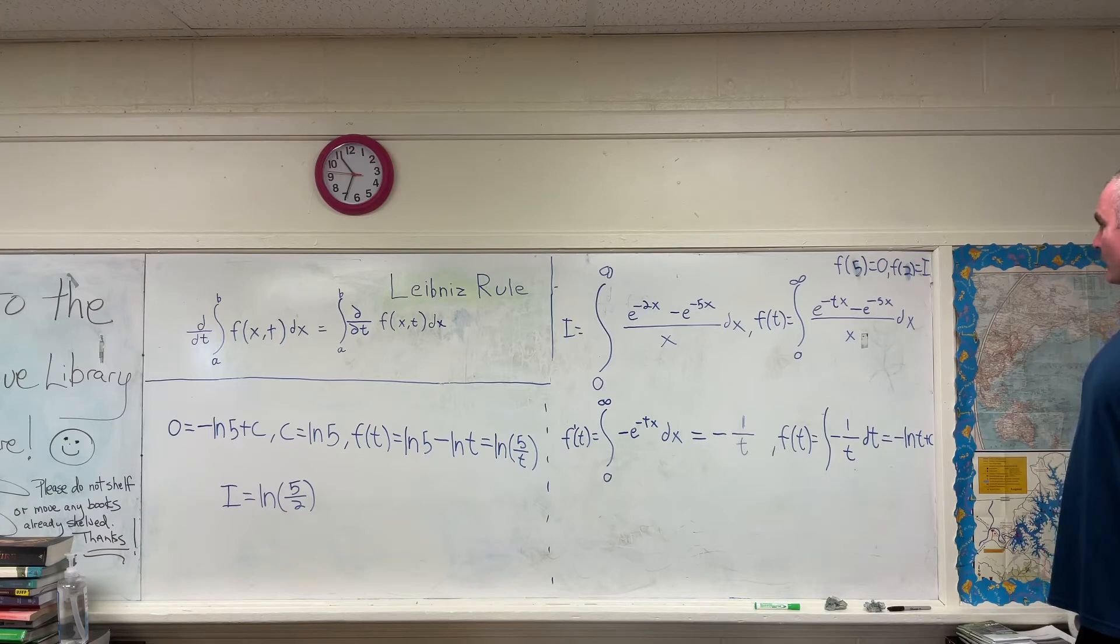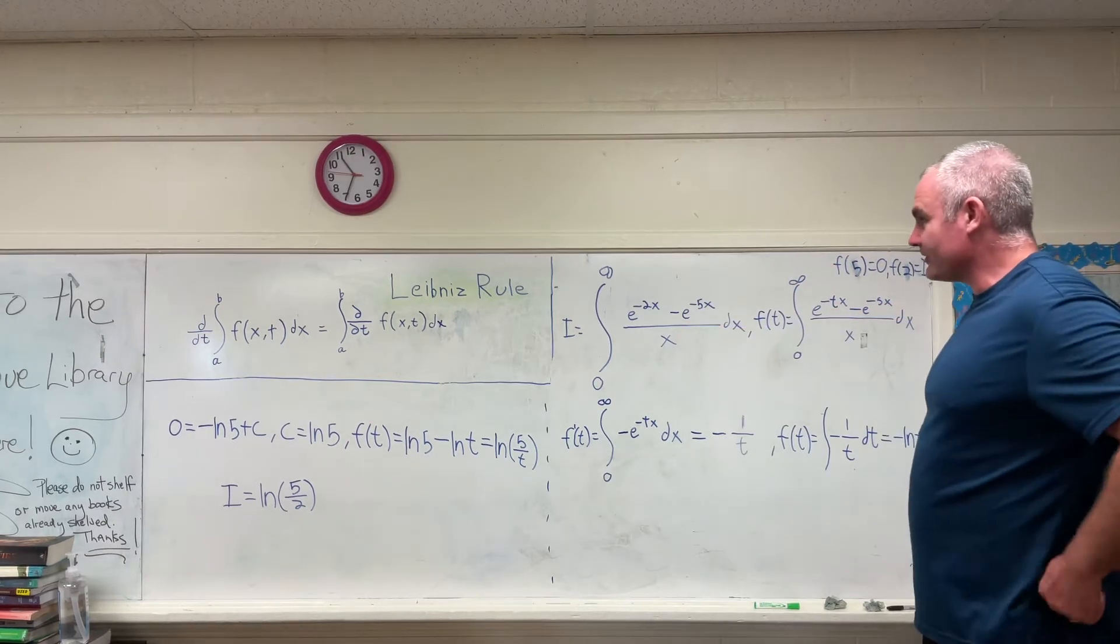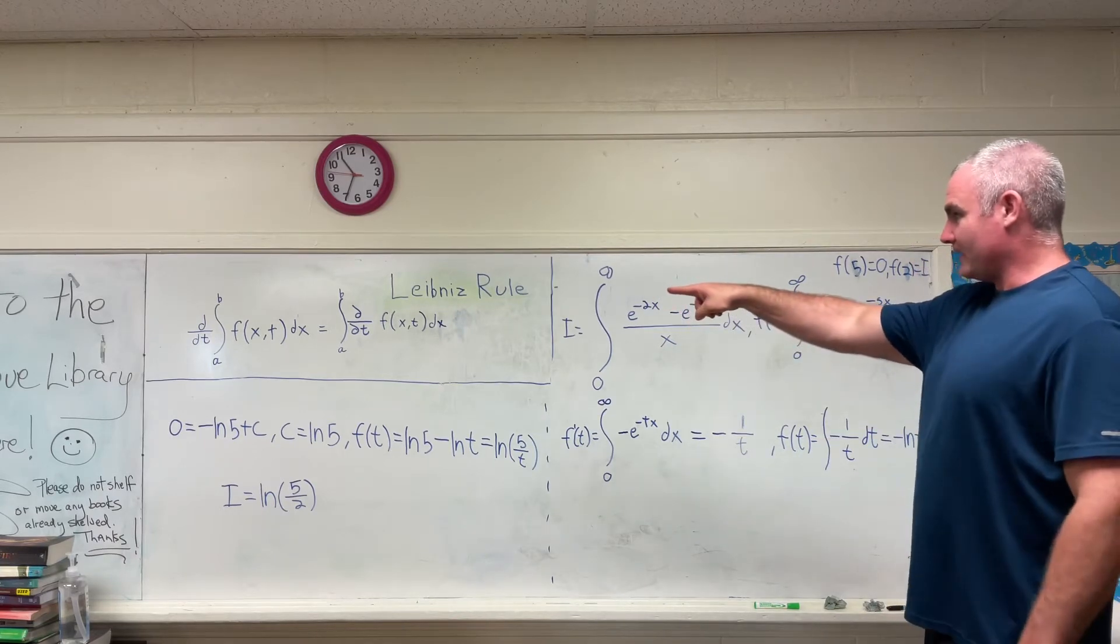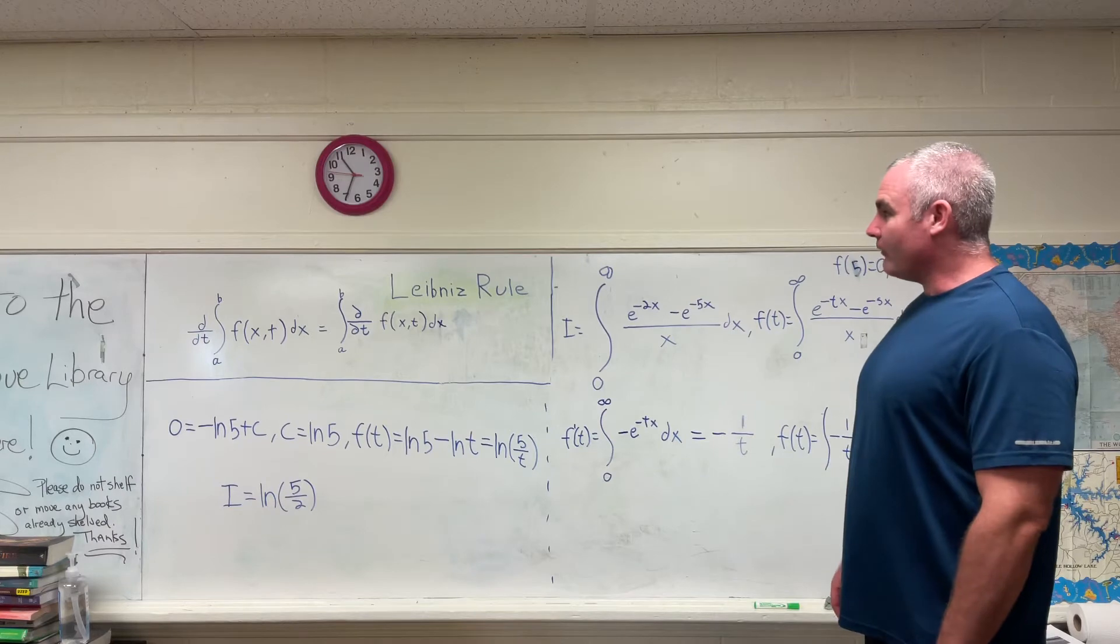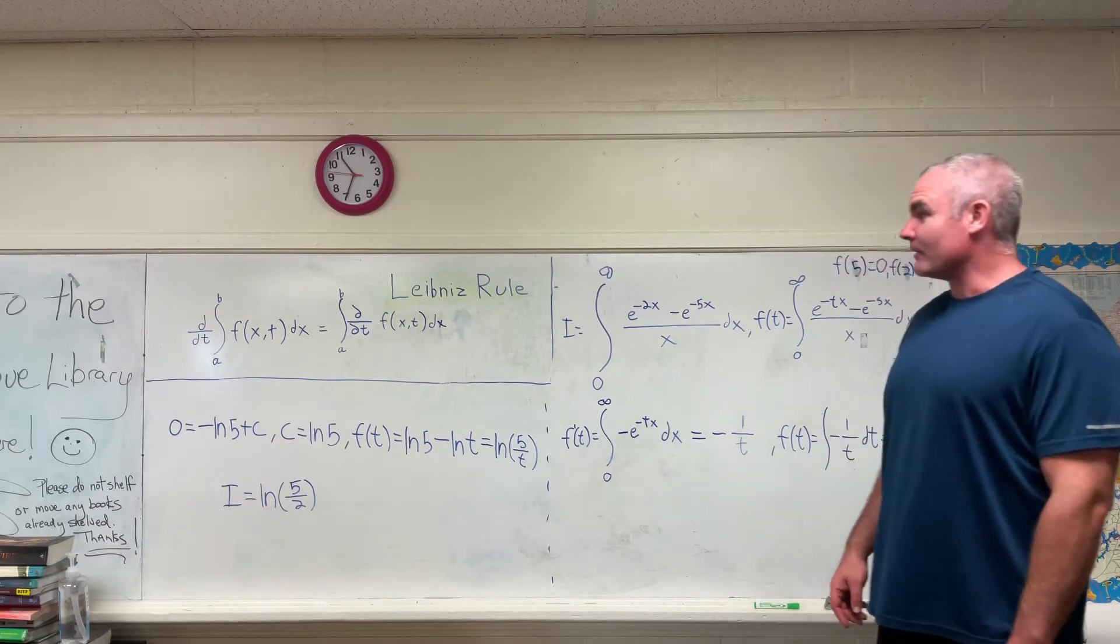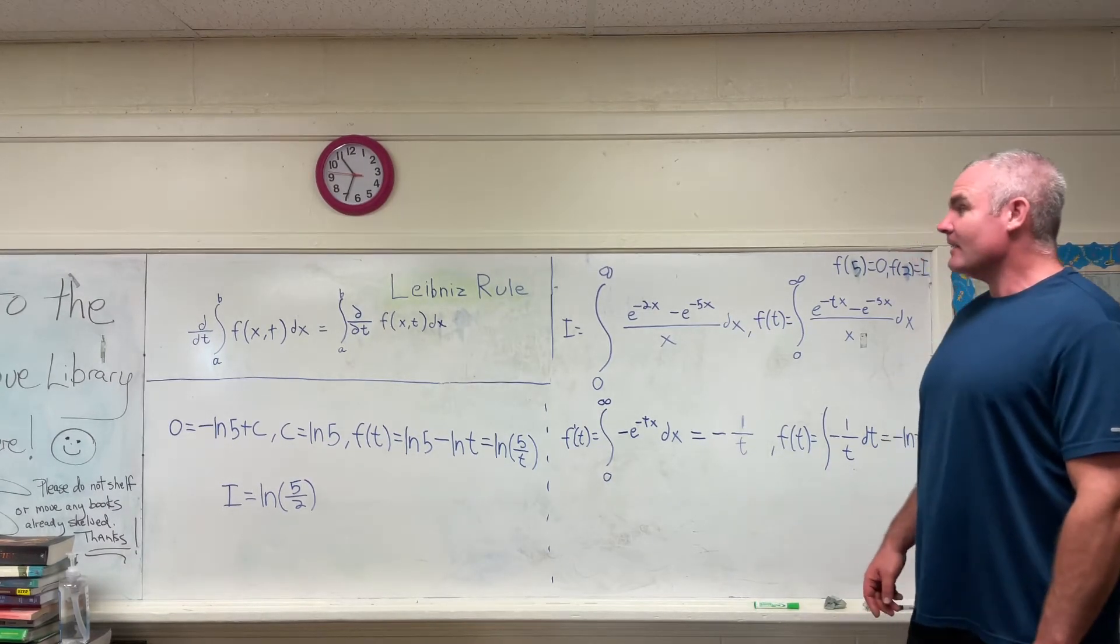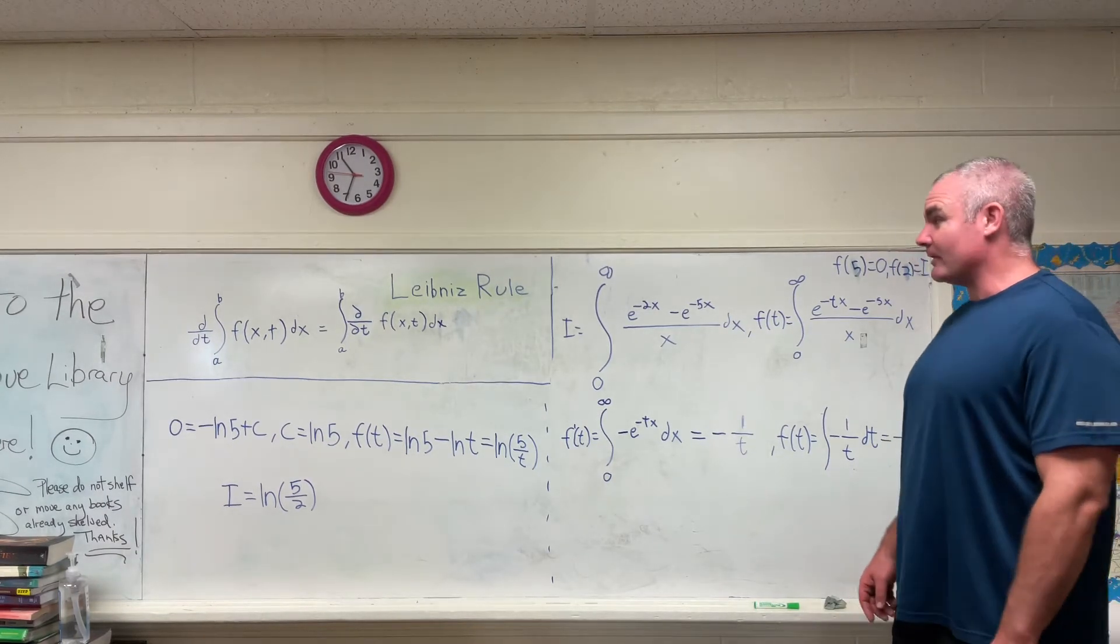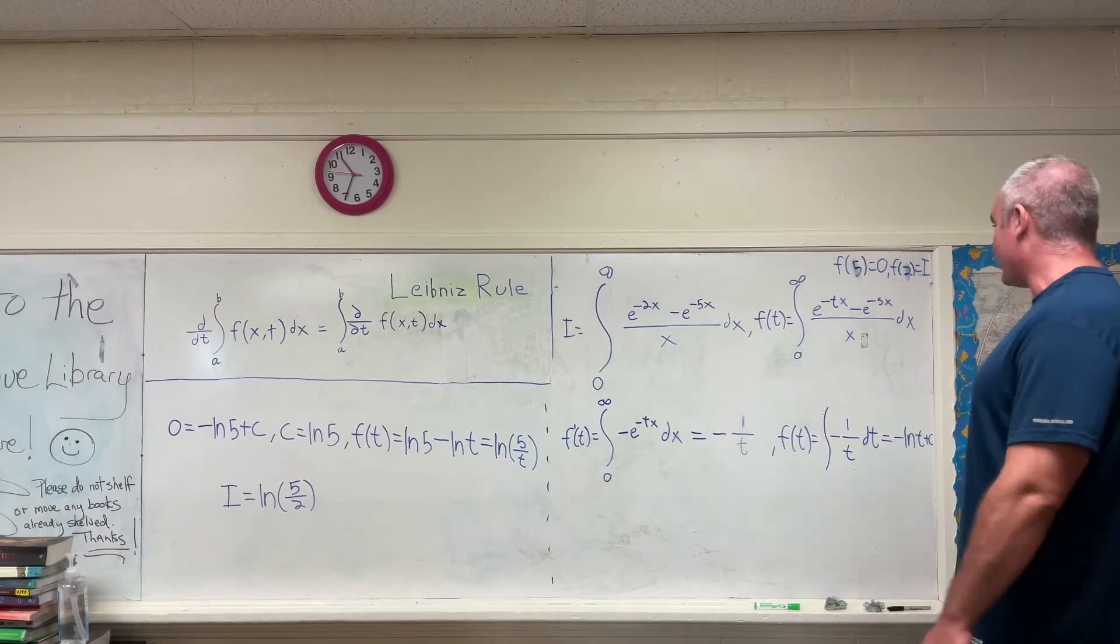Next step. What we want to do is we want to use the Leibniz rule for differentiation under the integral sign, which I have written right there. It states that the derivative with respect to t from a to b of some function of x and t integrated with respect to x is equal to the integral from a to b of the partial derivative with respect to t of that same function integrated with respect to x.